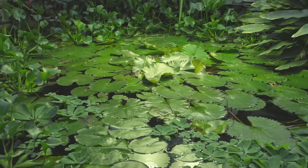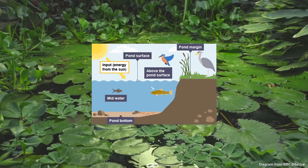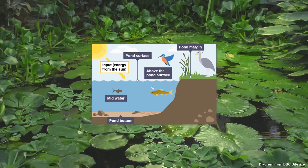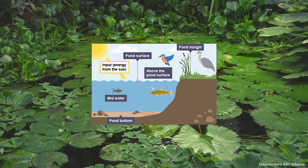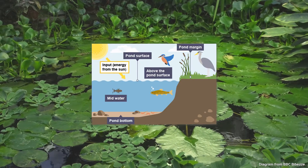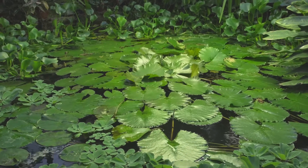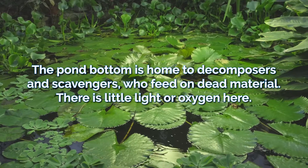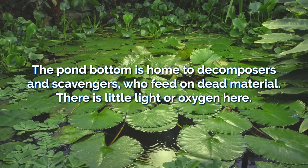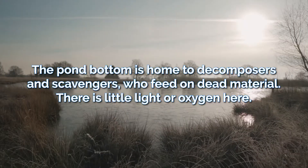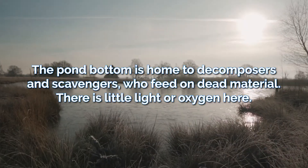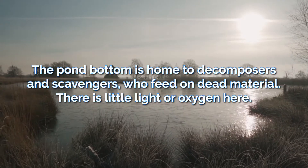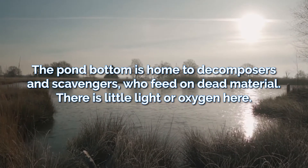An example of a small-scale ecosystem is a freshwater pond. This ecosystem consists of five key areas. The pond bottom is home to decomposers and scavengers who feed on dead material such as water worms. There is little oxygen or light here.